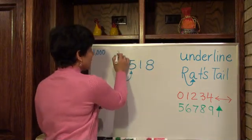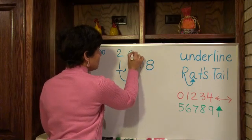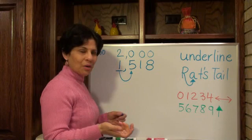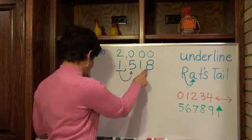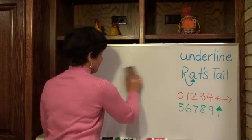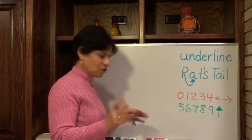So the 1 becomes a 2 and everything on this side becomes 0 and my number is 2000. So 1518, round it up to 2000. Let's try a bigger number still. Why? Because our strategy is going to be the same. It just won't change.